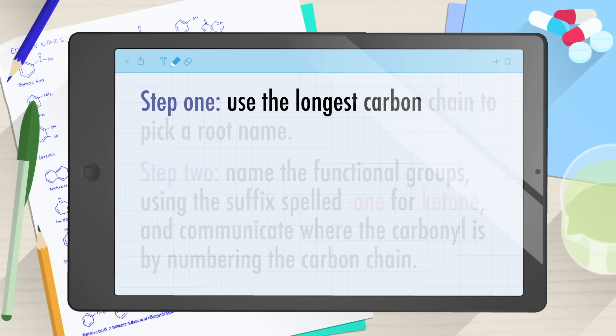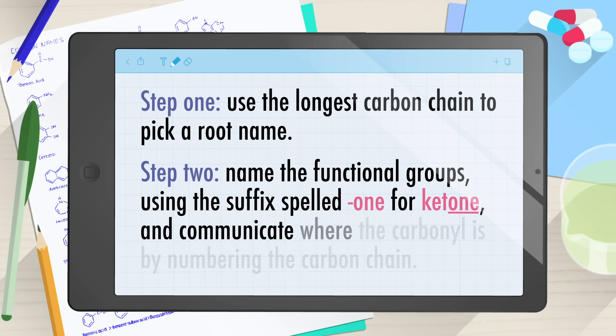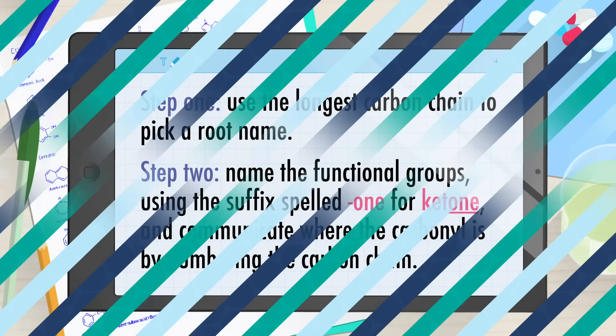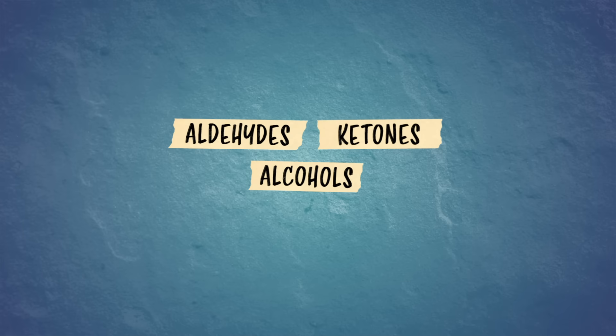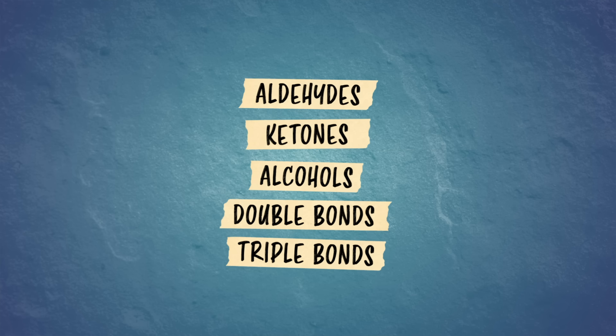On to ketones! Again, we use our IUPAC rules. Step 1, use the longest carbon chain to pick a root name. Step 2, name the functional groups using the suffix -one for ketone, and communicate where the carbonyl is by numbering the carbon chain. Like aldehydes, ketones take priority over alcohols and therefore over double bonds, triple bonds, and substituents. But ketones are below aldehydes because aldehydes have to be at the start of the chain. For example, this compound has a 3-carbon chain, so the root is prop, it only has single bonds so we use -an, and it's a ketone with a carbonyl group on the second carbon, so we add 2-one. Introducing propan-2-one — because we followed IUPAC rules, this is a systematic name. But the simple ketone has a common name you might recognize too: acetone, often used in nail polish remover and to clean glassware in chemistry labs.